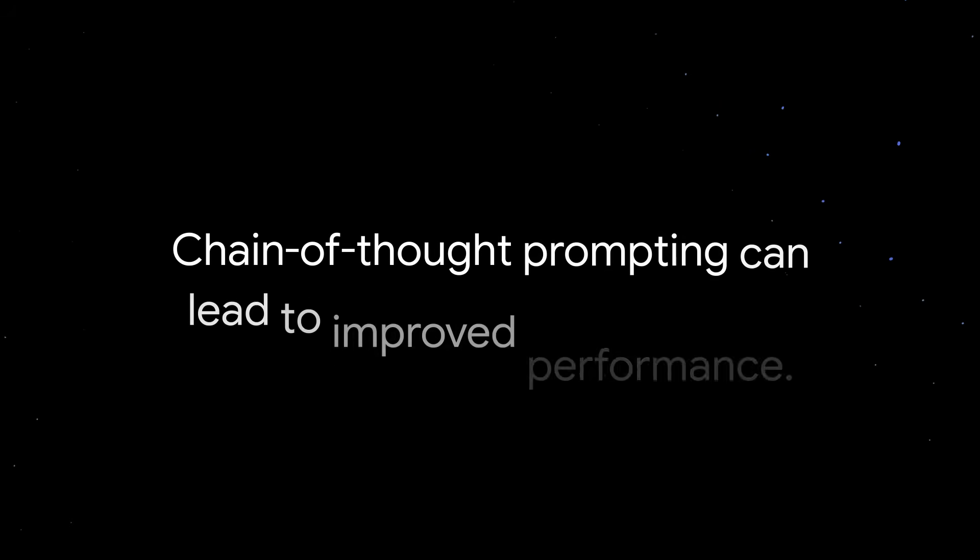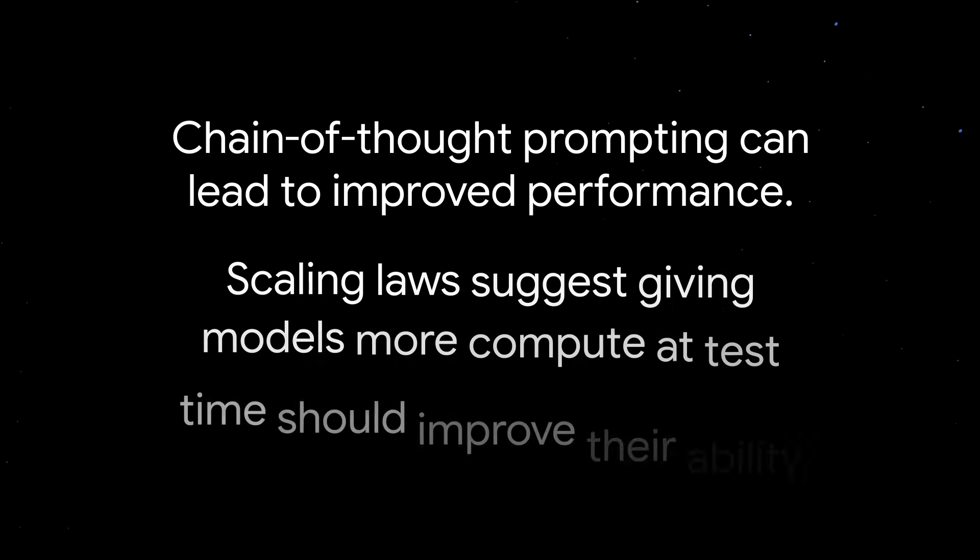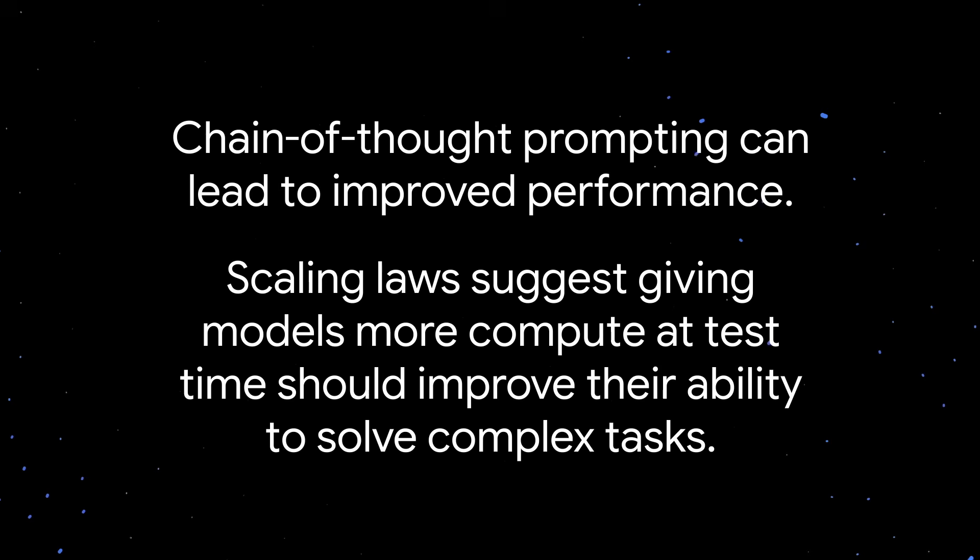So, putting all of this together to answer our original question of how do thinking models work, we saw that with chain-of-thought prompting, letting a model generate a series of intermediate steps before producing an answer can lead to improved performance. And previous scaling laws would suggest that allowing models to think longer, aka giving them more compute at test time, should improve an LLM's ability to provide correct responses to complex tasks.